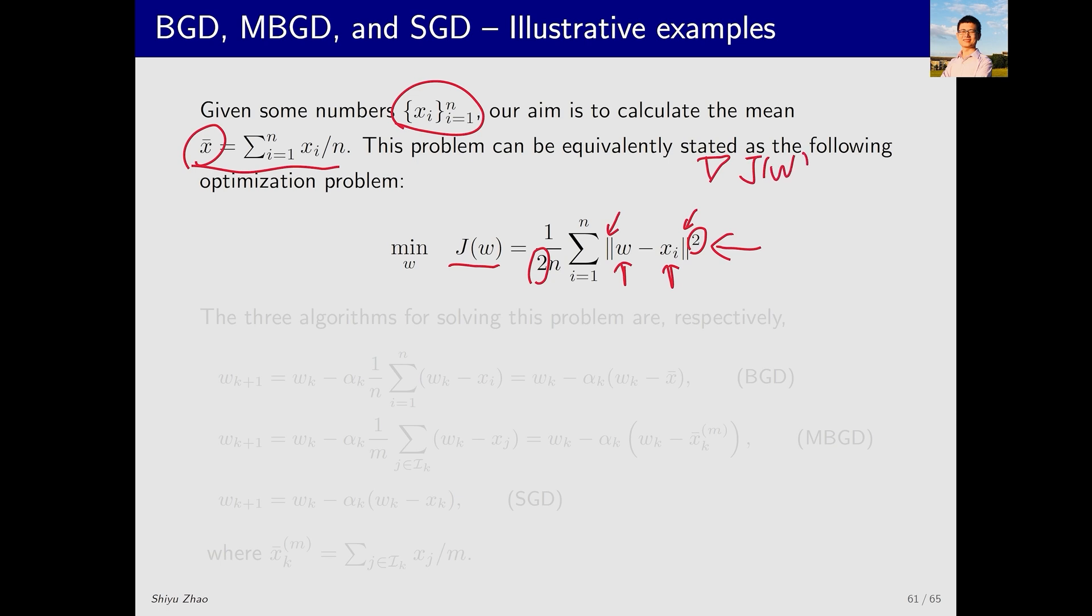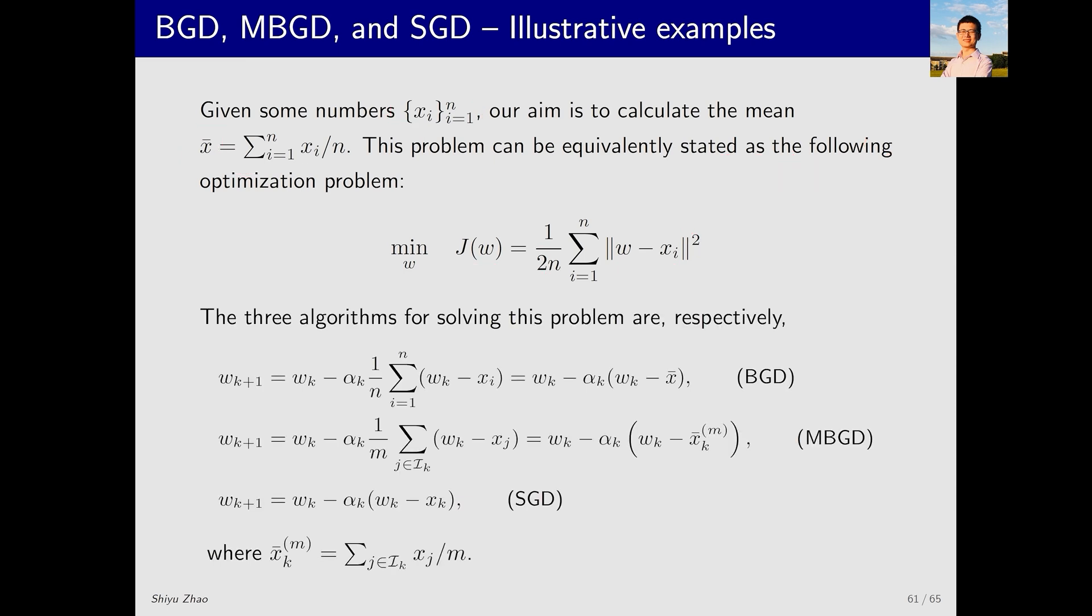Specifically, for the function J(W), the gradient with respect to W is 1 over N sigma (W - X_i). You can verify this yourself. With this gradient, we can quickly derive the three algorithms: BGD, MBGD, and SGD.